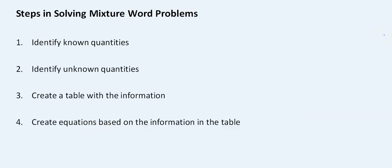How are we going to solve mixture word problems? We're going to first identify the known quantities, then identify any unknown quantities, and then we'll create a table. The table makes it easier to manage what you're trying to mix and also makes it easier to see the equations you need to create from the word problem. After that, we're going to create equations based on the information from the table.